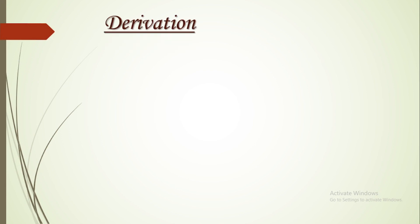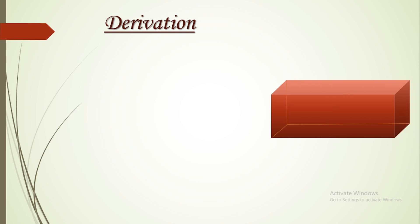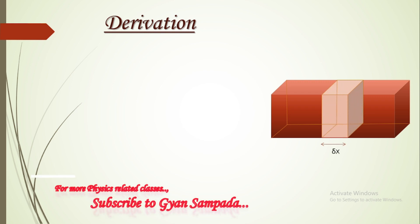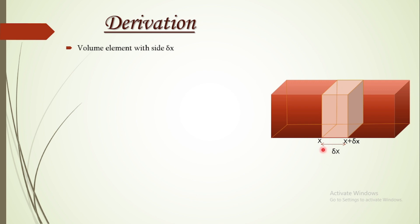The continuity equation is derived by considering the combined time rate of change of excess carrier density within a volume element. Consider a semiconductor block with a volume element of length delta x. If one side is at position x (plane 1) and the other at x plus delta x (plane 2), then the number of electrons in the volume element is given by delta n times A times delta x, where A is the area and delta n represents the excess carriers.